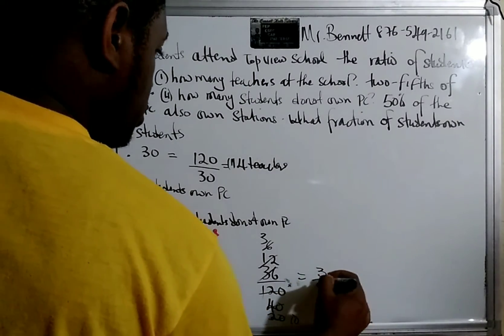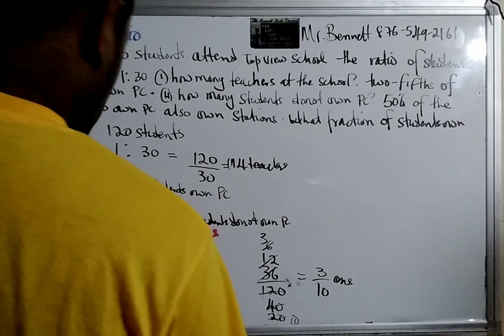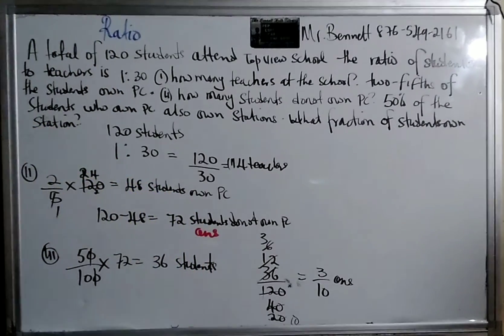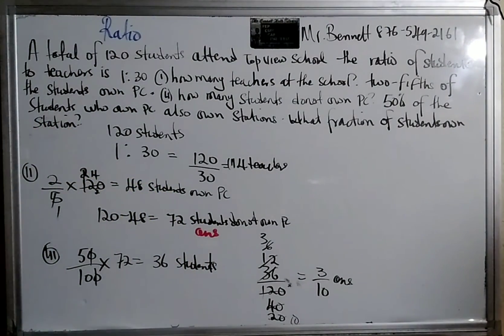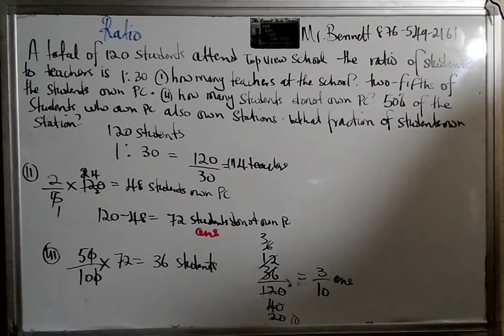So the fraction would be three over ten, and that will be our answer. So three-tenths of students, or 30%, own station. Alright guys, that's the solution. Thanks for watching. See you guys in the next video.